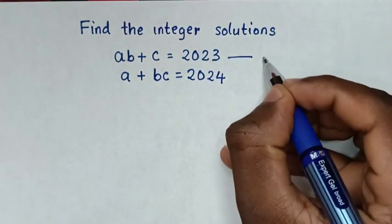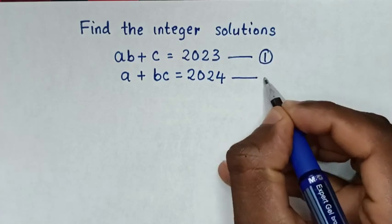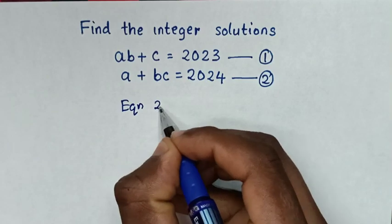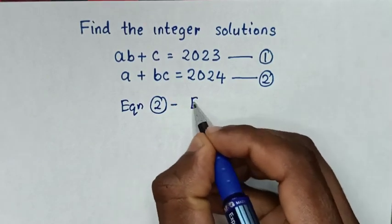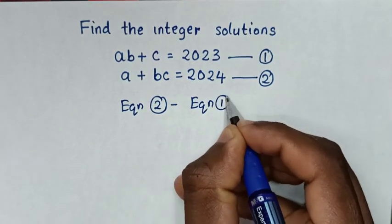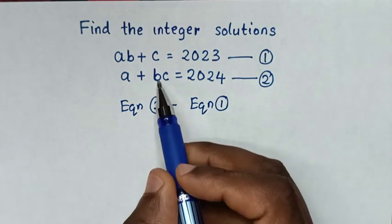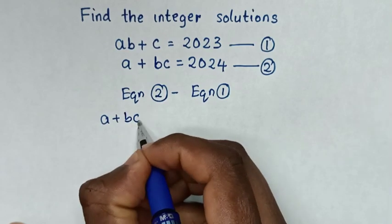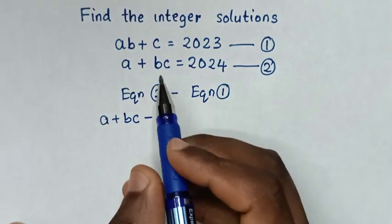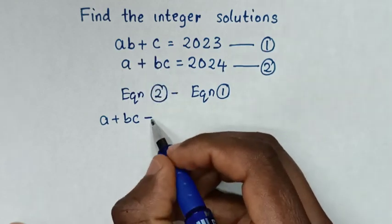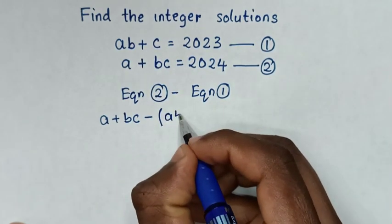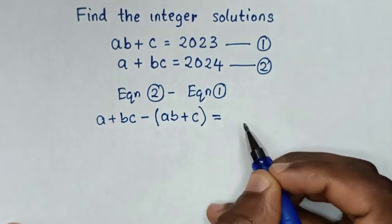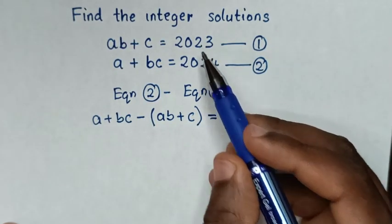We let the first expression equation 1 and the second equation 2. Then we take equation 2 minus equation 1. On the left side we have A plus BC, minus AB plus C, which equals 2024 minus 2023.